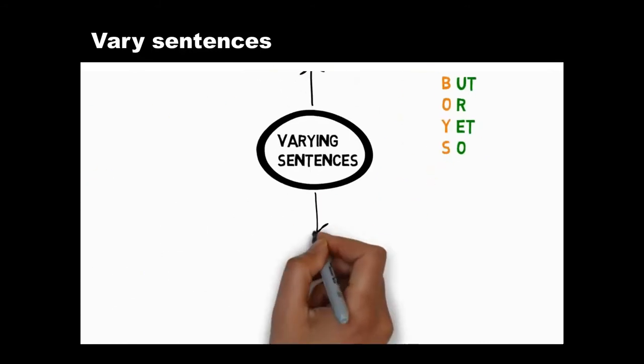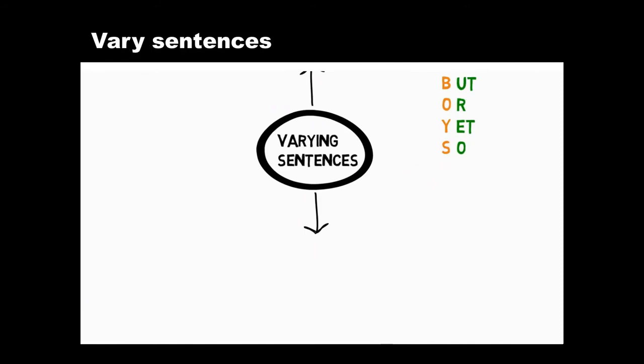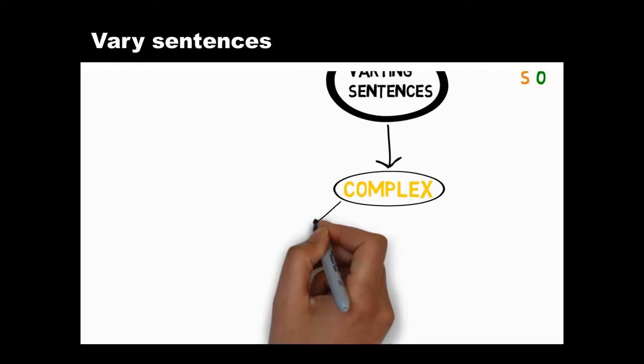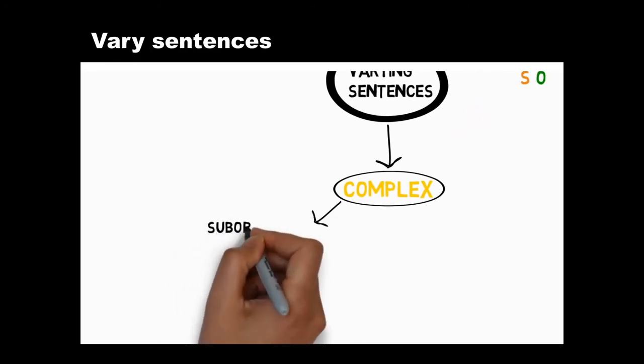As we've seen, compound sentences add variety to your writing. Another way to vary your sentences is to create complex sentences to express more complex relationships between ideas. There are three main techniques for creating complex sentences.